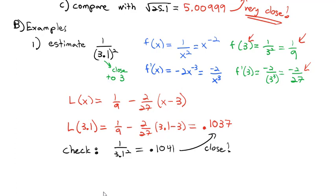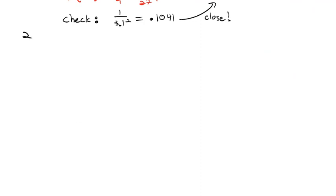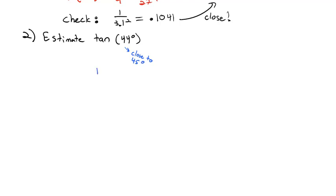Doing it by hand was much nicer than calculating 3.1 squared and doing that long division. This even works with trigonometry. Let's estimate the tangent of 44 degrees. We'll change that to radians first — it's close to 45 degrees. From the unit circle, 45 degrees is pi over 4, so we're looking at the tangent of pi over 4 to estimate our point.